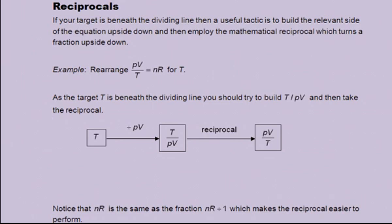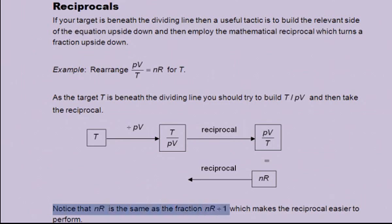From the question, this is equal to nr. Then take the reciprocal of nr. Notice that nr is the same as the fraction nr/1, which makes the reciprocal easier to perform. This gives 1/nr. Now you multiply by pv, to give pv/nr is equal to t.